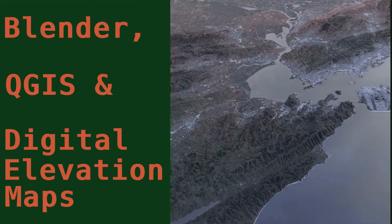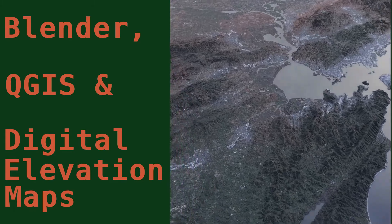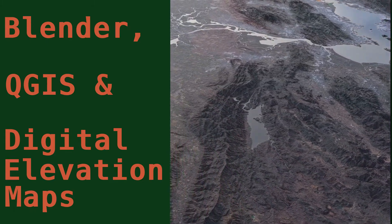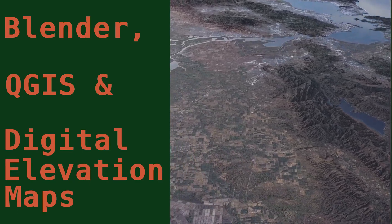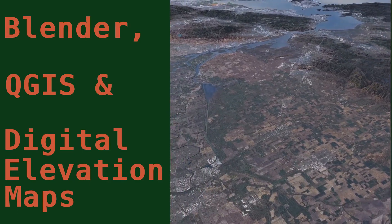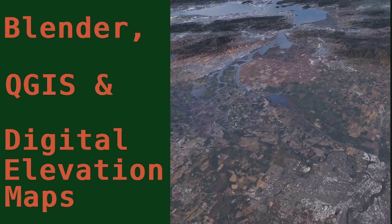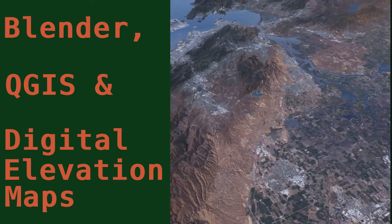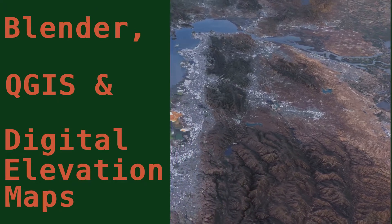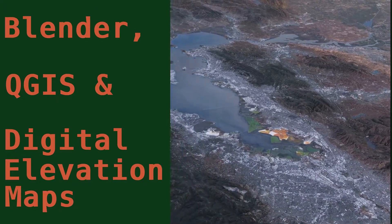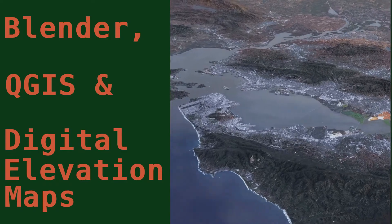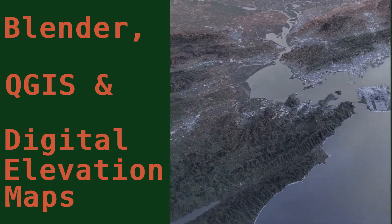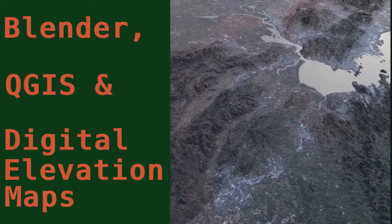In this video I'm going to show you how to combine satellite data with Blender to create 3D models that are accurate in both geology and color. For example, this is a 3D render of the San Francisco Bay Area that I created using satellite data, running it through software called QGIS, and then using that software to generate texture maps, bump maps, and displacement maps that were then imported into Blender to create this final scene.